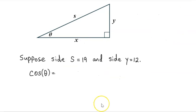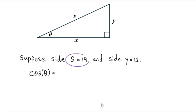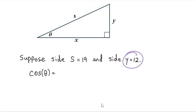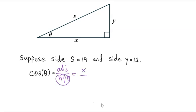In this next example, we want to identify the cosine of theta. We have a hypotenuse S of 19 and the opposite side equal to 12, but we do not know the adjacent side. Cosine is adjacent over hypotenuse, so we need the adjacent side X over S. We know S is 19, so it's X over 19, but we do not know X, so we need to find it using the Pythagorean theorem.